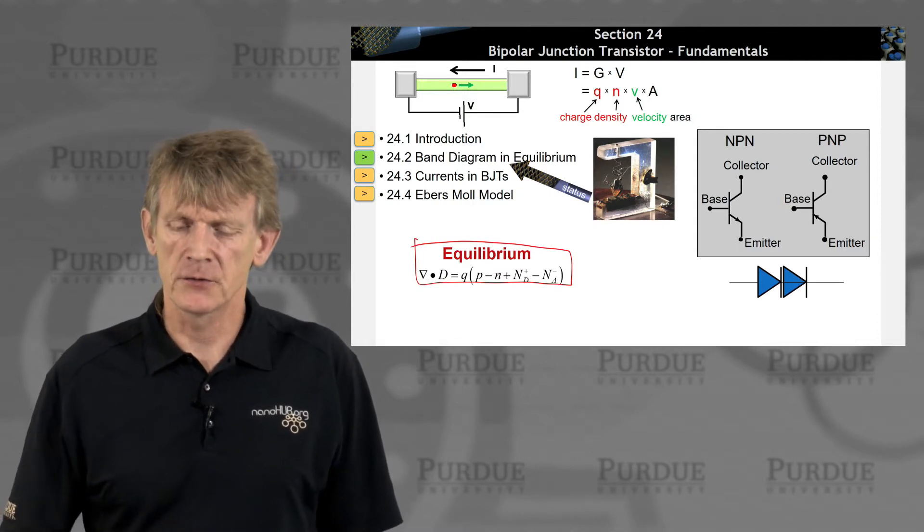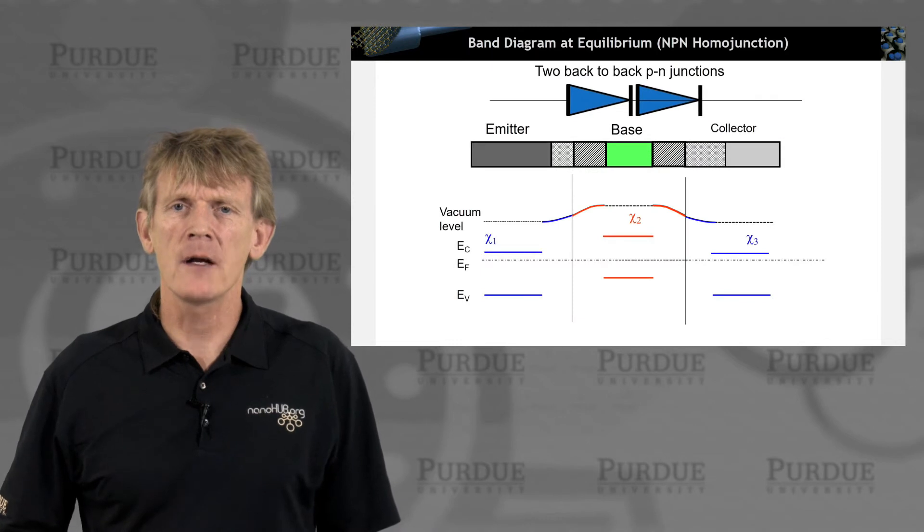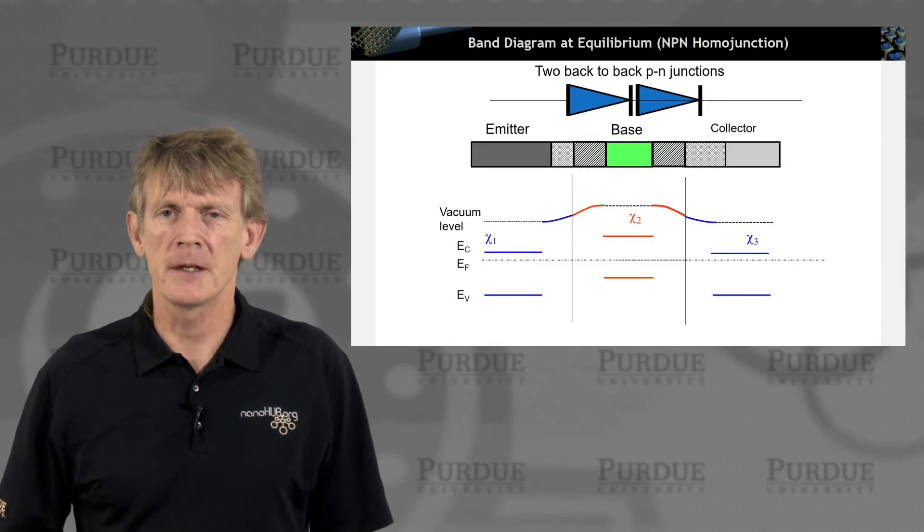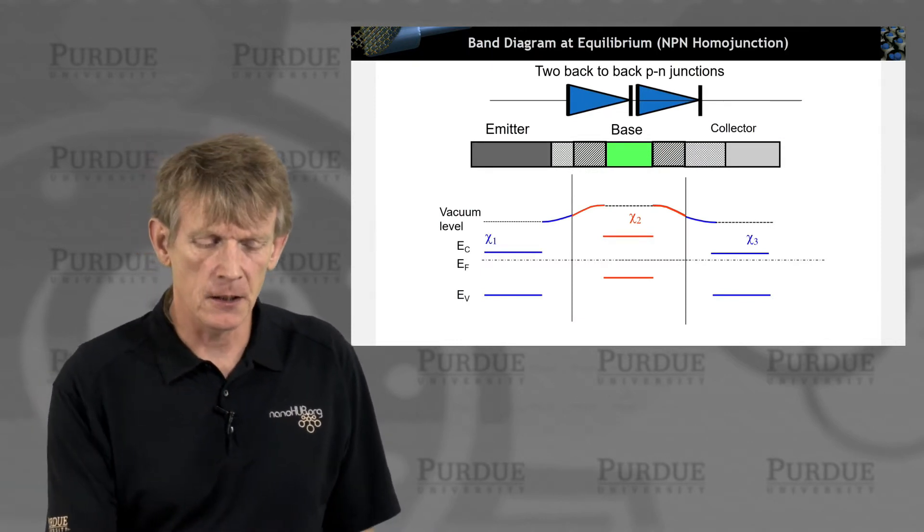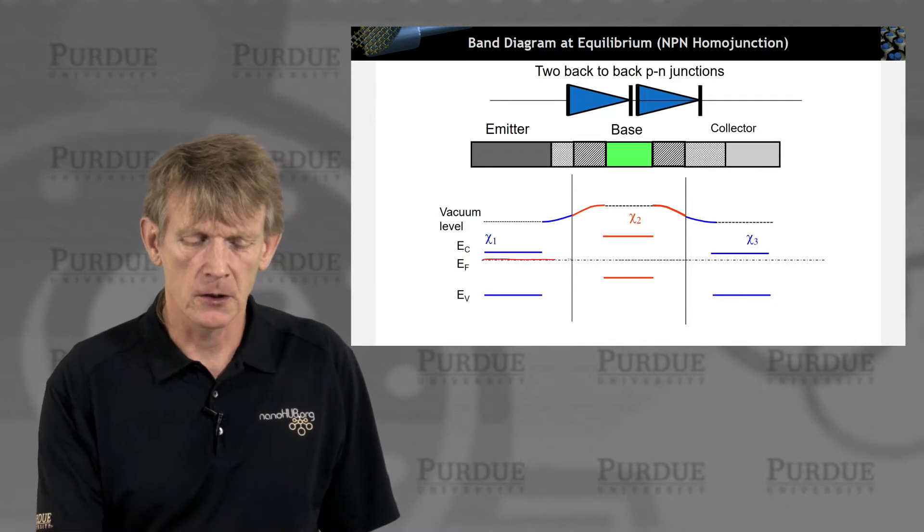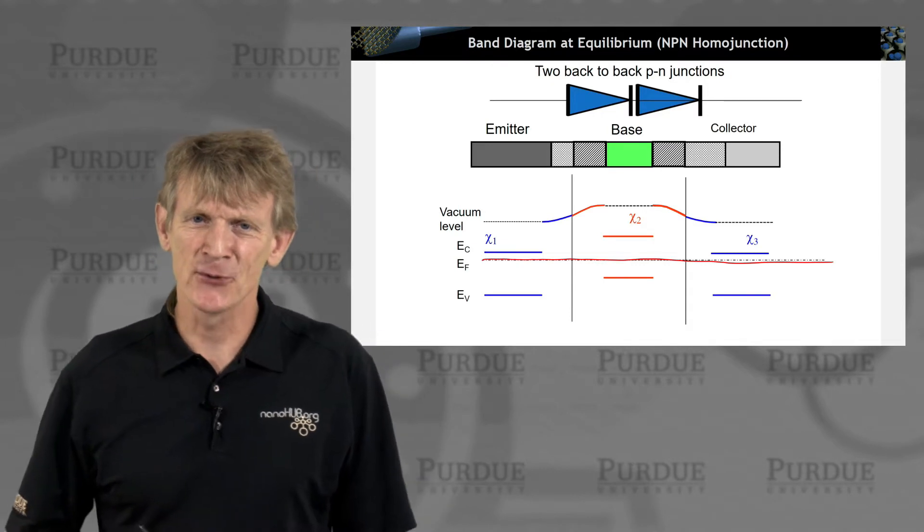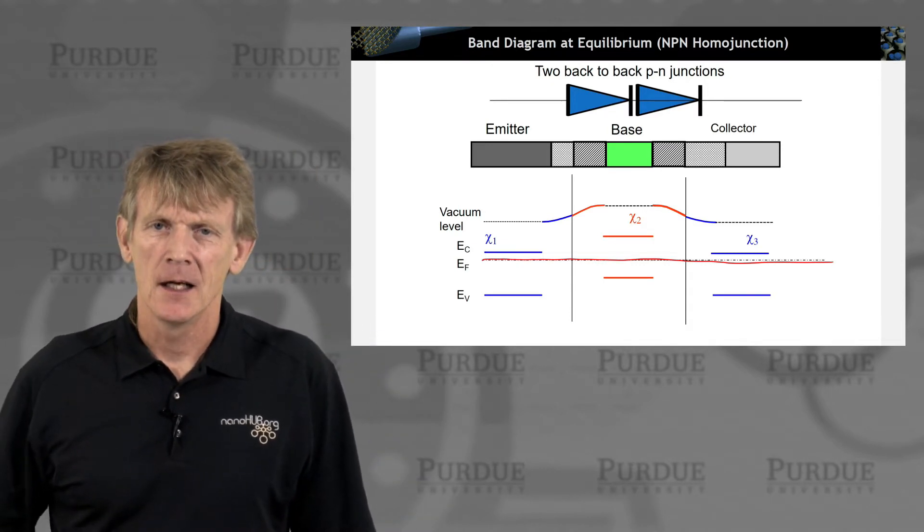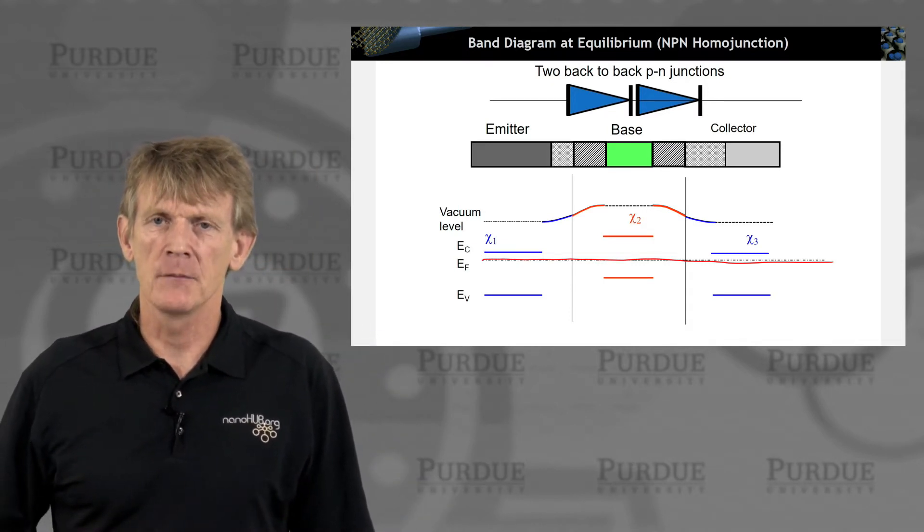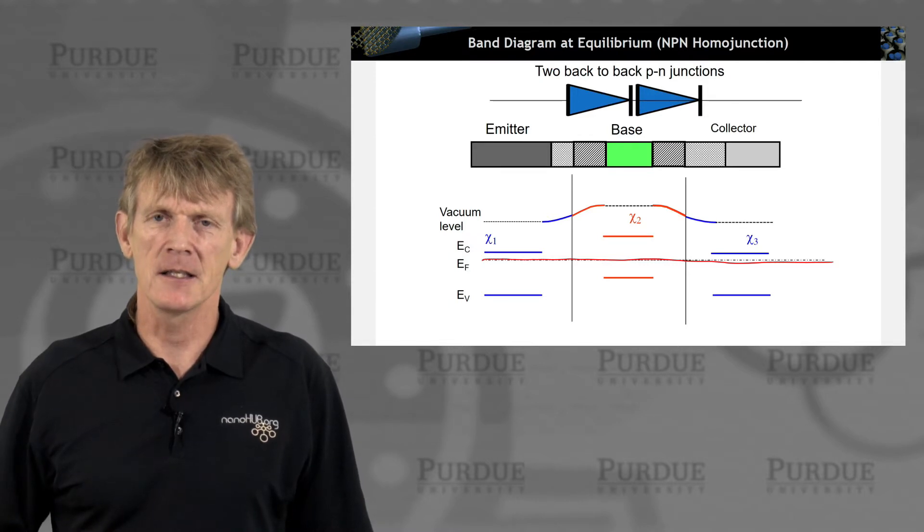And we've described already a way of how to draw band diagrams for PN diodes, right? You start out from always draw a Fermi level as flat as you can through the device. And if you have multiple materials attached to each other, like here,